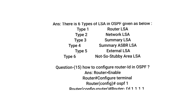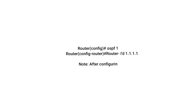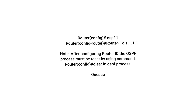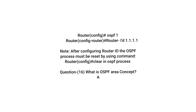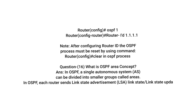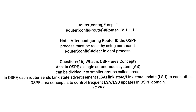Question: How to configure Router ID in OSPF? Answer: Router> enable, Router# configure terminal, Router(config)# router ospf 1, Router(config-router)# router-id 1.1.1.1. Note: After configuring the Router ID, the OSPF process must be reset using the command Router# clear ip ospf process.